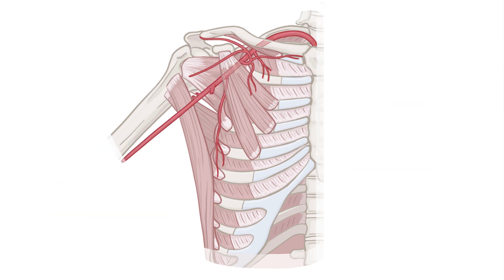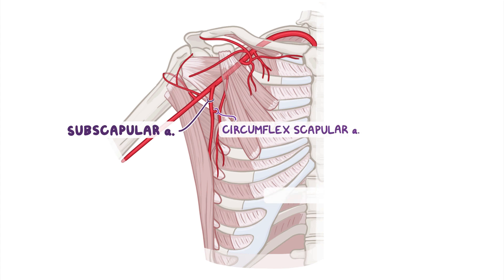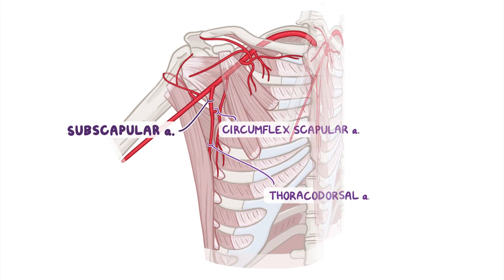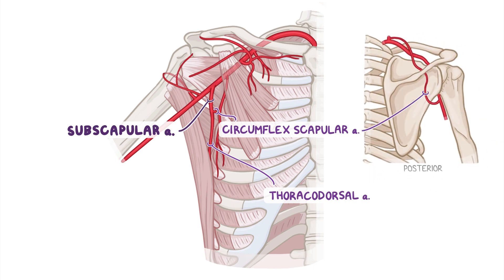The third part of the axillary artery has three branches: the subscapular artery, the anterior circumflex humeral, and the posterior circumflex humeral arteries. The subscapular artery is the largest branch of the axillary artery, which travels along the subscapularis muscle before quickly dividing into its terminal branches — the circumflex scapular and thoracodorsal arteries. The circumflex scapular artery turns posteriorly and passes between the subscapularis and teres major muscles to reach the dorsal surface of the scapula, where it forms an important anastomosis with the suprascapular artery around the scapula. The thoracodorsal artery travels with the thoracodorsal nerve to supply the latissimus dorsi muscle.